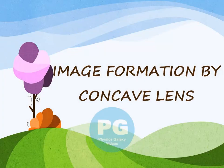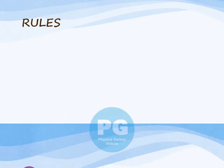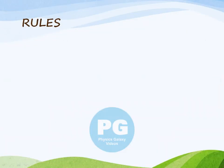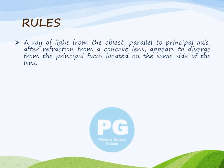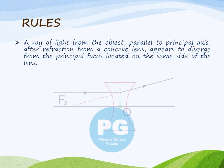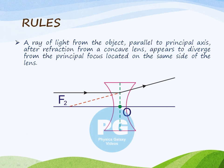Let's see the image formation by concave lens. Here are the rules. A ray of light from the object parallel to the principal axis, after refraction from a concave lens, appears to diverge from the principal focus, located on the same side of the lens.